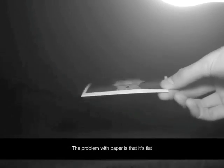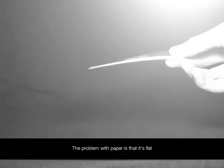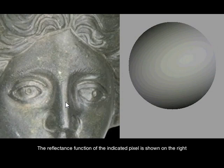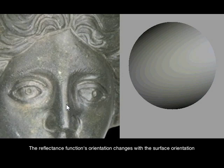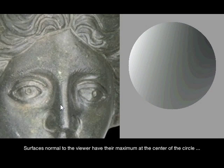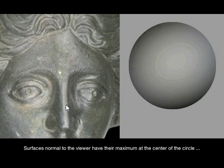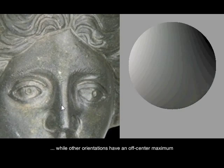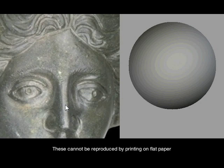The problem with paper is that it's flat. The reflectance function of the indicated pixel is shown on the right. The reflectance function's orientation changes with the surface orientation. Surfaces normal to the viewer have their maximum at the center of the circle, while other orientations have an off-center maximum. These cannot be reproduced by printing on flat paper.